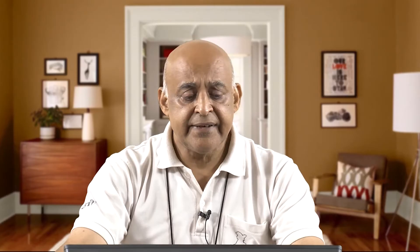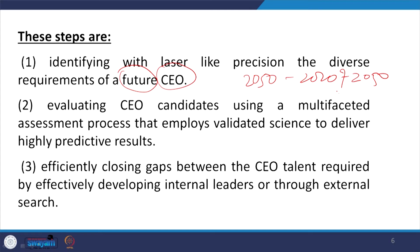The steps are: identifying with laser-like precision the diverse requirements of a future CEO. Here we have to understand two aspects — future and CEO. When we are talking about the requirements for the future, such as from 2020 to 2050, what type of future is it? Different forums like the World Economic Forum keep talking about future scenarios, and the person who is going to be leading the organization — maybe for 5 or 10 years — must match those future requirements.